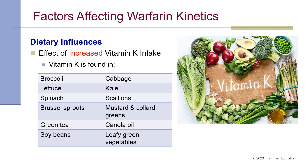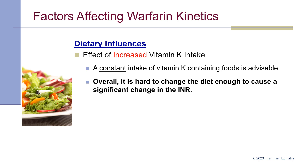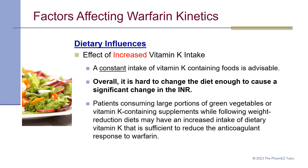Foods that increase vitamin K intake include broccoli, cabbage, lettuce, kale, spinach, scallions, Brussels sprouts, mustard and collard greens, green tea, canola oil, soybeans, and leafy green vegetables. It is recommended that a constant intake of vitamin K-containing foods is advisable. Overall, it is hard to change the diet enough to cause a significant change in the INR. However, patients consuming large portions of green vegetables or vitamin K-containing supplements while following weight reduction diets may have sufficient intake to reduce the anticoagulant response to warfarin.